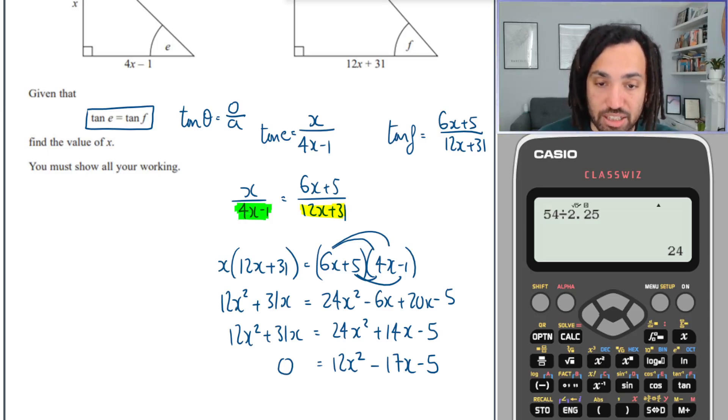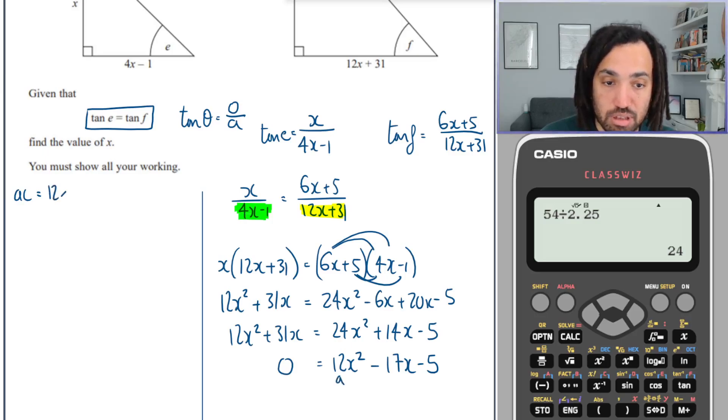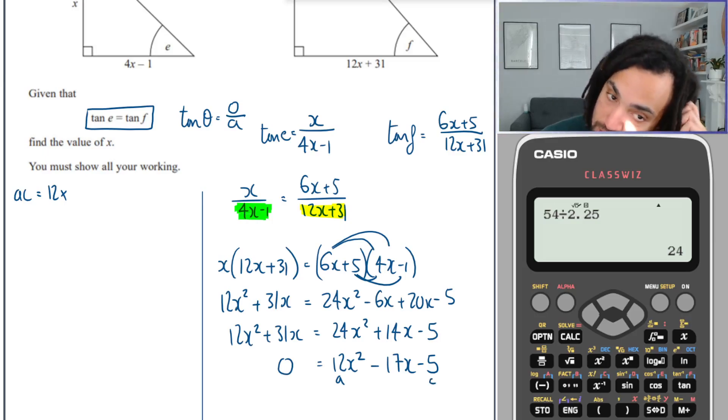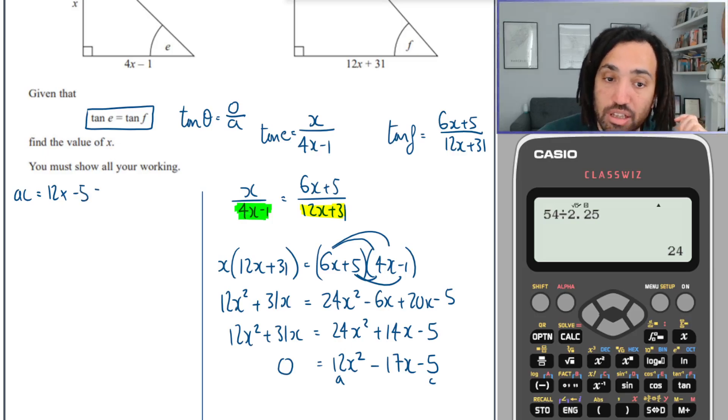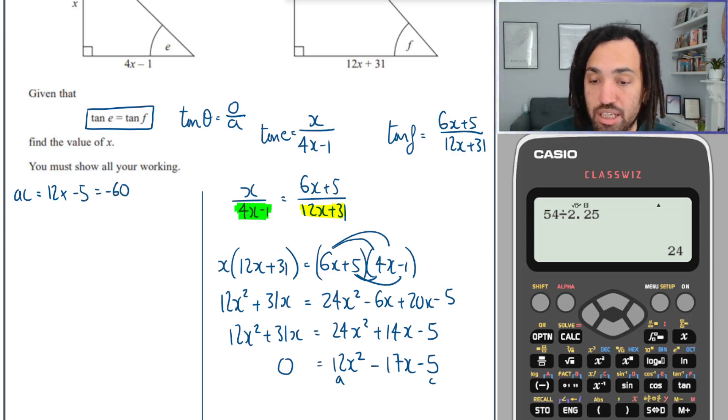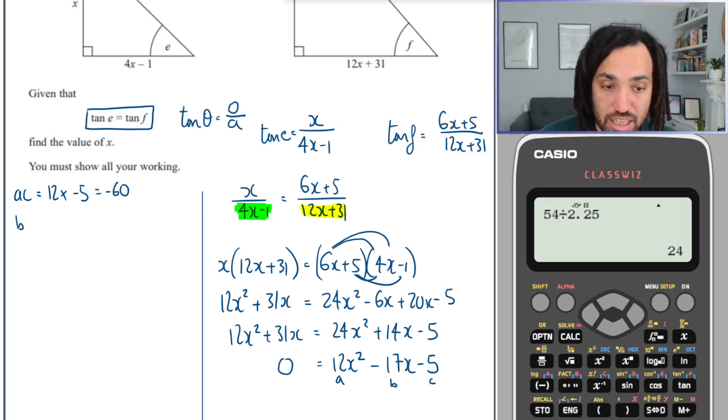Now we need to factorize that, so let me just grab some space. I'm going to use the AC method. The A term is the number of x squared, which is 12, times by the C term, which is the constant term at the end without an x, so that's minus 5. That gives me minus 60.